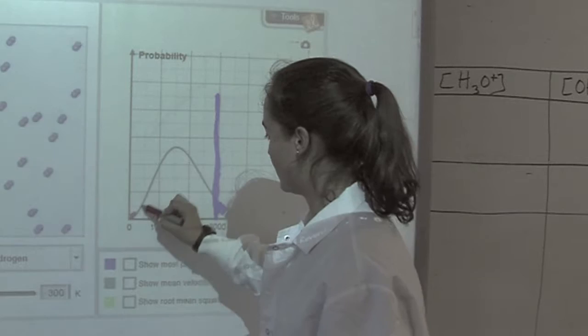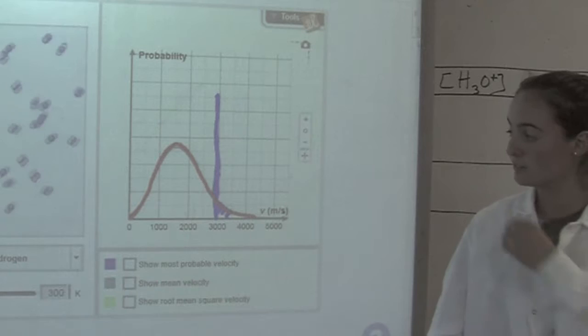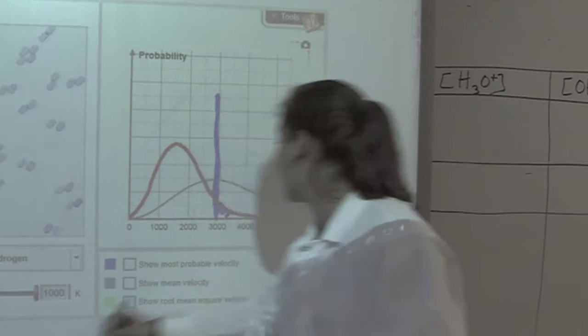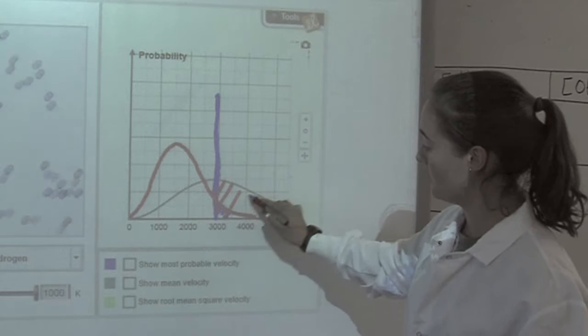However, when the temperature is increased and the average kinetic energy is now at a much higher velocity, the fraction of molecules with enough kinetic energy to overcome the activation energy is much greater. This is because the average kinetic energy is a measure of temperature.